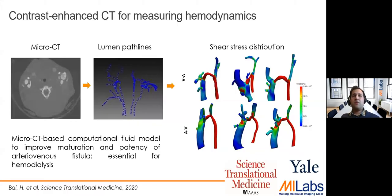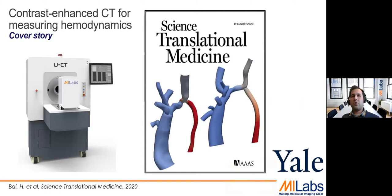When it comes to vasculature imaging, microCT has played a key role in several applications. Most of the time, researchers inject the animal with a contrast agent that has long enough circulation in the blood, allowing them to later segment the lumen pathlines. Like in this case — a study from Yale University published in Science Translational Medicine — they utilized microCT data to generate shear stress distribution throughout the arteries and identify the area with the most shear stress. This was a very interesting study published as a cover story of the journal.